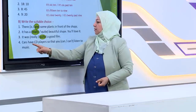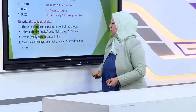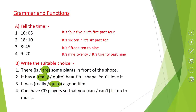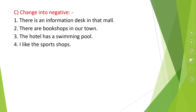In number four: cars have CD players so that you can or can't listen to music. Pay attention to the meaning here. Cars have CD players — the purpose is so that you can listen to music — so that you can listen to music.